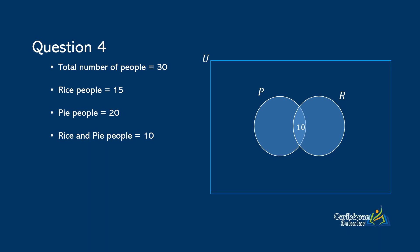And P is for pie people and R is for rice people, and we are going to put in the number of people of each set as opposed to listing out the individual elements like we did in the earlier questions. So we know that the number of rice and pie people is ten, but there were fifteen rice people. So that means that the number of people who ate rice only is five. And similarly, there were twenty pie people, but ten people ate both rice and pie. So that means that the number of people who ate pie only is ten.